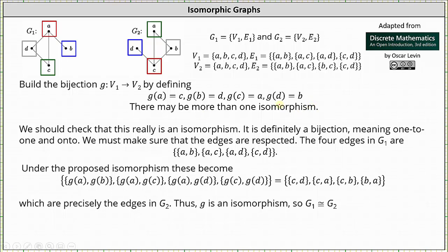And again, we need to check to see if this really is an isomorphism. It definitely is a bijection, but we must make sure the edges are respected. So again, the four edges in G1 are given by E1. And now we apply the proposed isomorphism, which gives us the resulting edge set. Notice C comma D came from G of A comma G of B, C comma A came from G of A comma G of C, and so on.